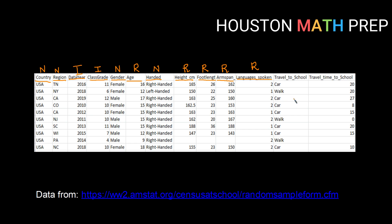Mode of travel to school is qualitative, so nominal or ordinal. I can't put car, walk, and bus in any kind of order, so that is nominal. Travel time to school is quantitative. The interval makes sense — one student travels seven minutes more than another — and also a 15-minute travel time being almost double an 8-minute travel time is meaningful. So travel time is ratio level.